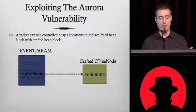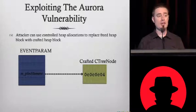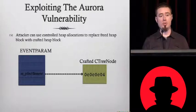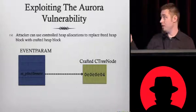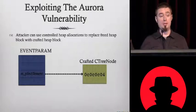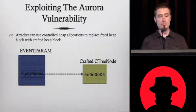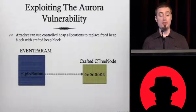If an attacker can use controlled heap allocations, they can replace the freed block with a crafted heap block. This is actually amazingly easy. Heaps on modern operating systems are very deterministic, and because you're exploiting this in JavaScript, all you need to do is look up what the size of that cTreeNode object is in memory, and then just do a bunch of memory allocations of that exact size. Usually in the first few, the Windows heap will return that same memory that event params still points to.